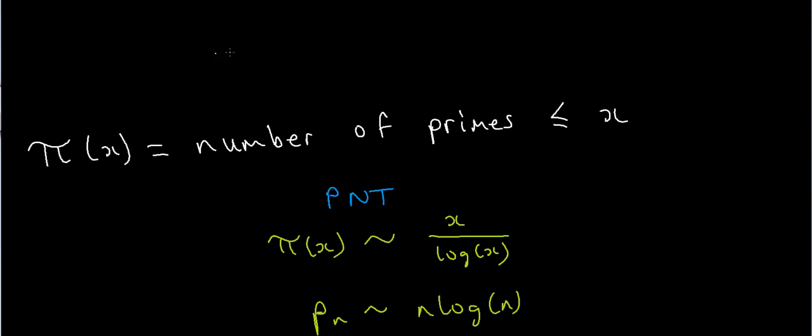If we just write down the prime numbers, we've got 2, 3, 5, 7, 11, 13, 17, 19, 23, 29, 31, and so on and so forth.